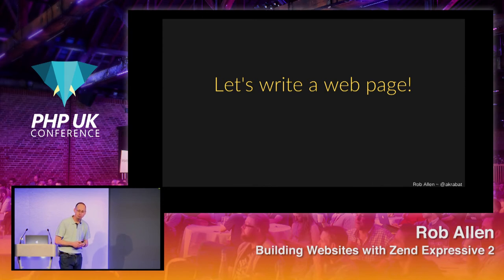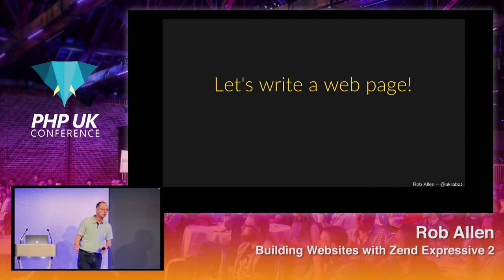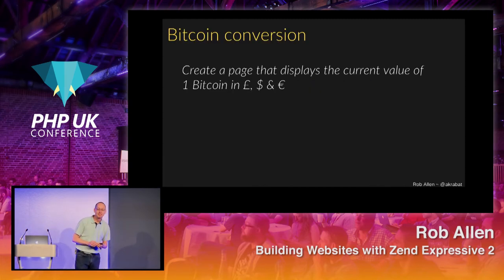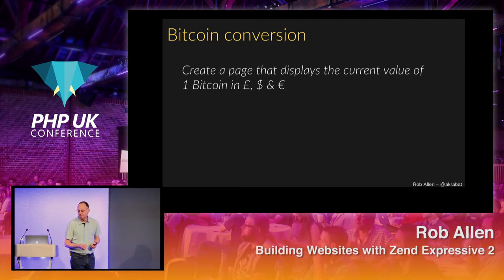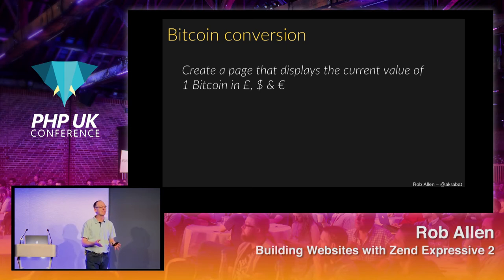Let's write a web page. My normal demos are CRUD applications — I normally use bookshelves, or in the old days CDs, but nobody knows what a CD is anymore. What's current today? Bitcoin is current today. This is a Bitcoin conversion program that will tell you how much one Bitcoin is worth in pounds, dollars, or euros. I chose this because there's a free-to-access API that gives me the data, which is why it's nice and simple to implement.